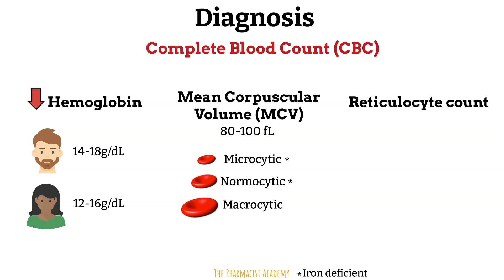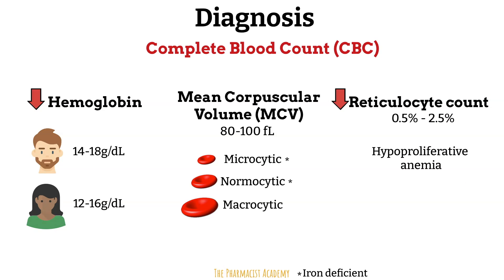We look at the reticulocyte count, which measures the amount of immature red blood cells — known as reticulocytes — in your bone marrow. Your bone marrow constantly creates new red blood cells to replace aging and dying ones, and that production line goes into high gear if you need more than usual. The normal reticulocyte count ranges from 0.5% to 2.5%. If the count is low, we refer to it as hypoproliferative anemia, meaning your bone marrow can't make the normal number of young red blood cells because you aren't getting enough of certain elements or vitamins needed for it.